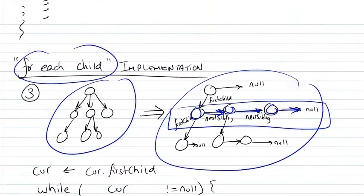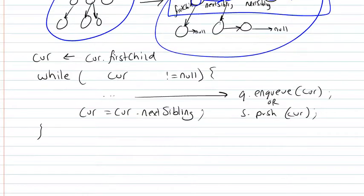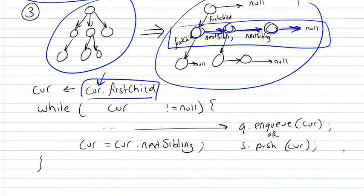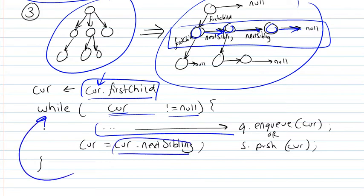So when we talk about for each child we're performing an operation, we're basically storing the first child of that particular node whose children we're trying to iterate through. Then we say, while current is not null, we're going to be performing something—either enqueuing, pushing, or visiting—and then we're going to move on to the next sibling and come back to that condition.